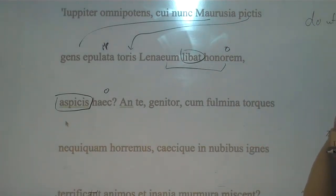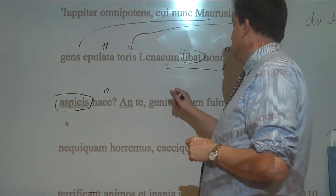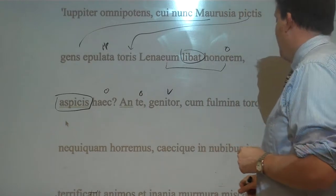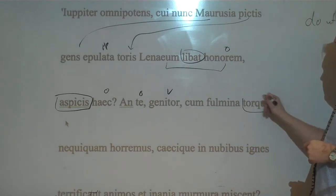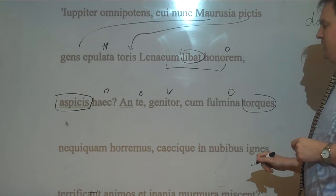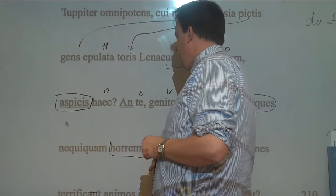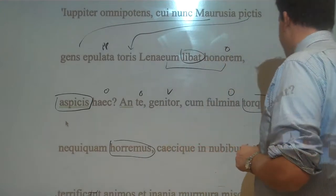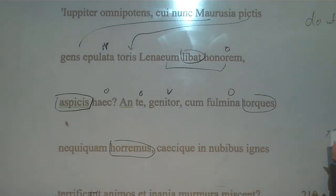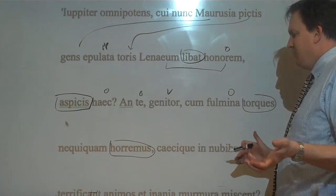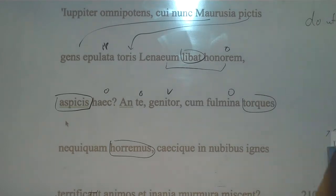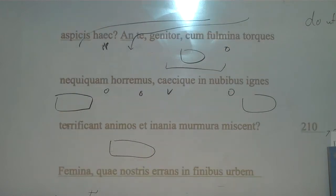He says, and you, father, this is accusative, when you twist or throw lightning bolts, in vain horimus, in vain we fear you. So blind fires in the clouds terrify our spirits and mix empty murmurs. So it's like, are we afraid of you when all these things are happening? If you're not going to do anything. So it's pretty, he's calling Jupiter out here a little bit.